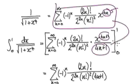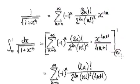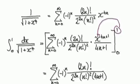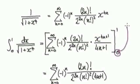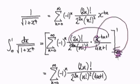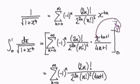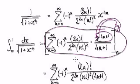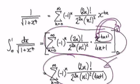Integrating this whole thing will then give you this, and we need to evaluate it from 0 to 1. So you put x equals 1 into the whole series. 1 to the power of anything is always 1, and when you put 0 in, everything is 0, so you can forget about that part. When you put 1 in, this whole thing here simplifies to this.